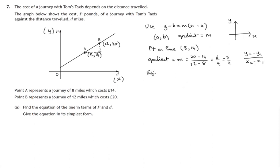The equation, but remember this is in terms of x and y, not d and p, is y minus b. We know that b is 14 or that's the one we're using. The gradient is 3 over 2. x minus a is the x coordinate of the point we're using which is 8.